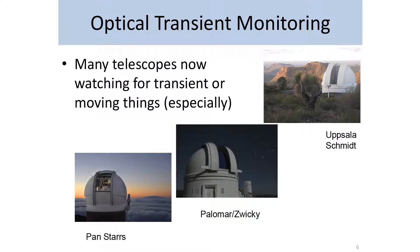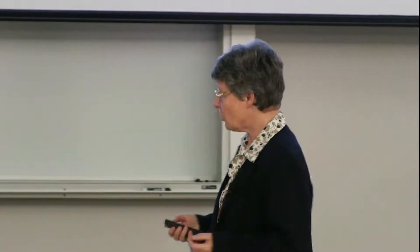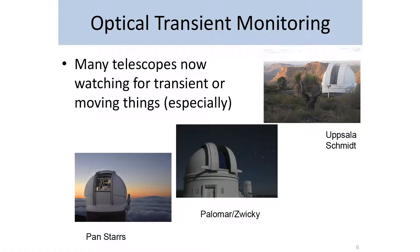A number of older telescopes have been repurposed. For example, we have one of the famous Palomar Schmidt telescopes, owned by the Swedes — Uppsala — but located in Australia. There have also been one or two new telescopes, like Pan-STARRS in Hawaii, a US telescope that got funding by saying it was going to spot killer asteroids — things that move which might be heading to hit the Earth. Make people twitchy and they'll give you money.